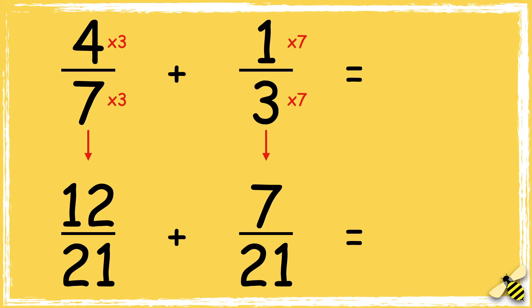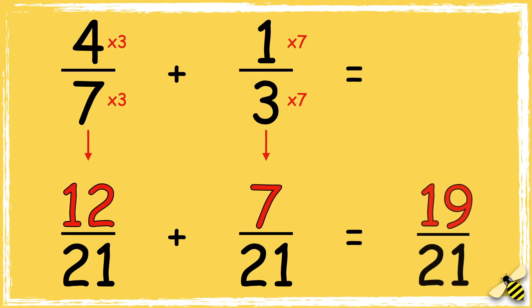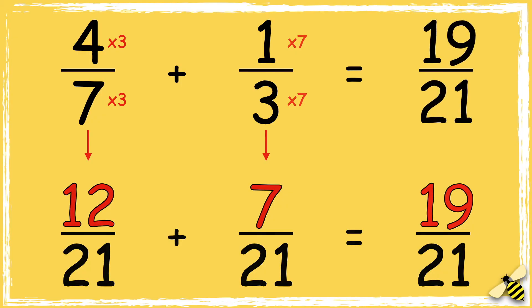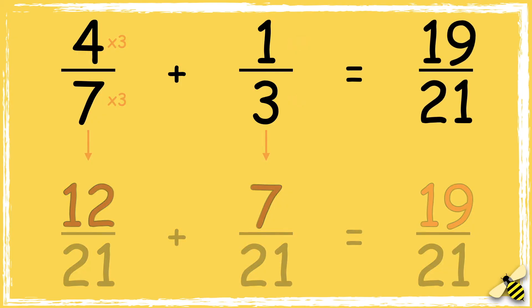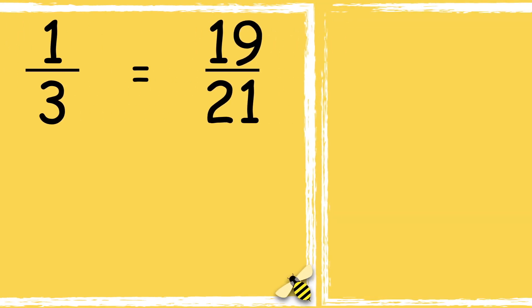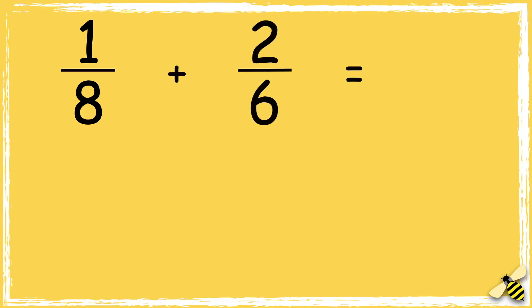Now that our denominators are the same, we can add the numerators: 12 add 7 equals 19, so the answer is 19 out of 21. Let's have a look at one more: 1 eighth add 2 sixths. We need to find a common denominator.